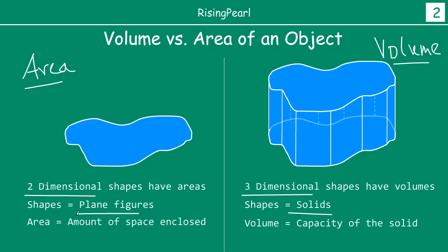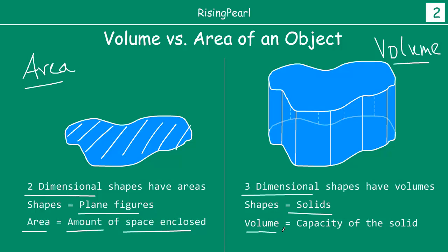One last point: area is the amount of space enclosed inside our figure or shape. When we talk about volume, it is exactly the same in theory — the amount of space enclosed inside the three dimensional shape or solid. But we also refer to that as capacity — the capacity of the solid. And oftentimes we refer to volume in terms of the amount of gas or water we can fill in. So the volume of a shape equals the volume of air or water we can fill inside it.